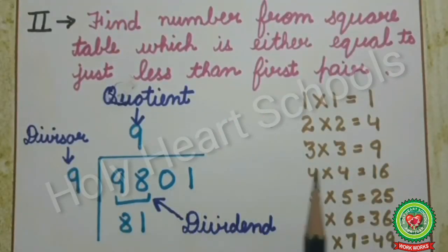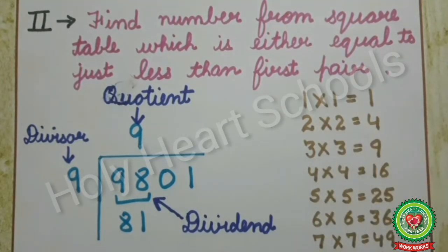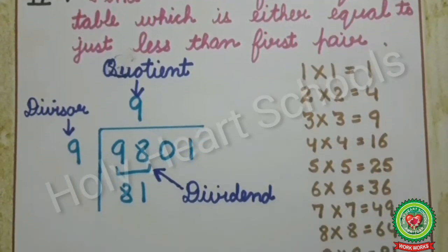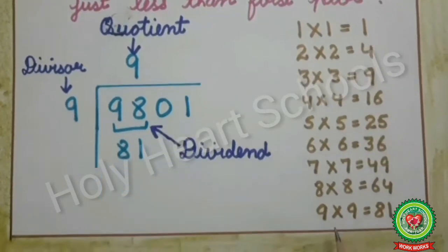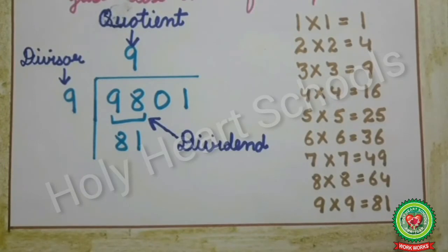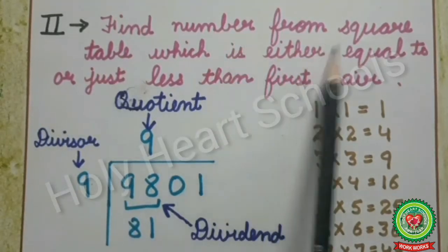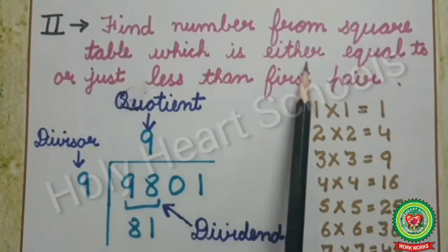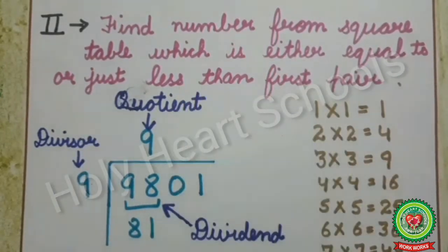Whenever you need to find square root by long division method, always write down the square table from 1 to 9 on the right-hand side, as I have written here: 1×1=1 through 9×9=81. The second step is to find the number from the square table which is either equal to or just less than the first pair.